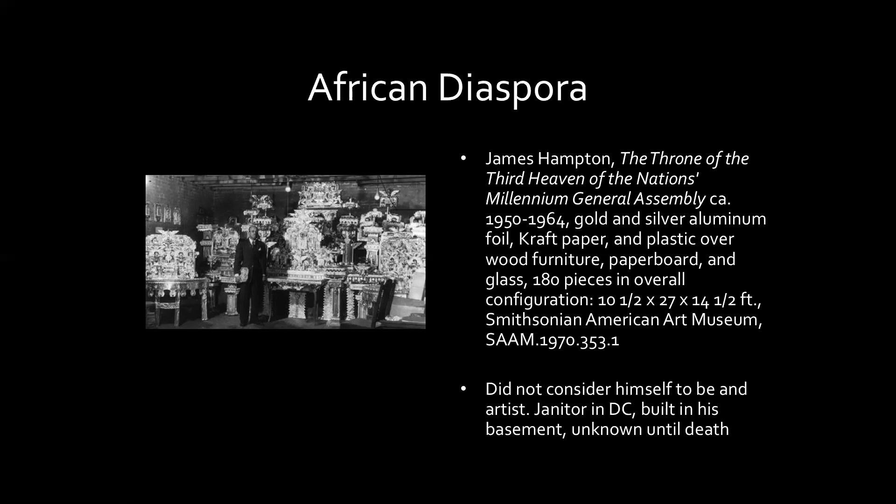The first artist we're going to talk about is an outsider artist. That term can be a blanket term for artists that didn't go to art school and aren't showing in galleries. Sometimes these artists will eventually show in galleries or sell their art, but not always — as is the case with James Hampton and his Throne of the Third Heaven of the Nation's Millennium General Assembly. Hampton never considered himself an artist. He's pictured here wearing a good suit in front of his art, which he hadn't shown anyone while he was alive.